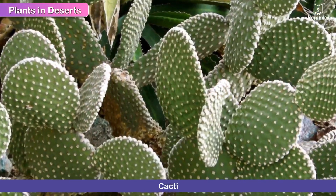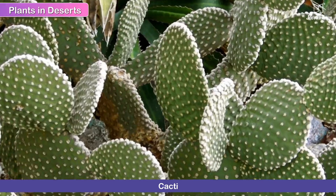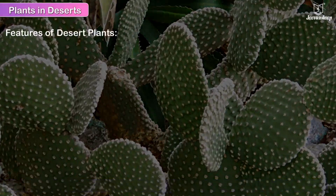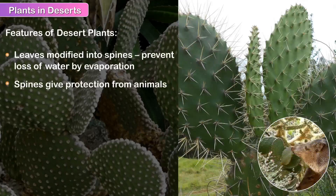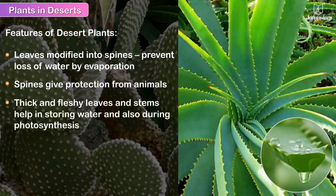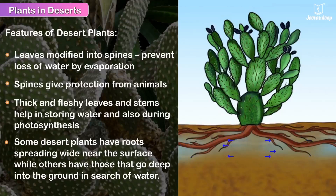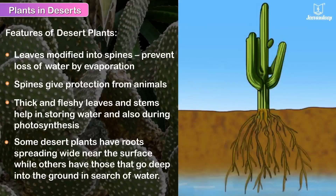Cacti are an excellent example of plants that adapt to desert climate. Some features of desert plants are: the leaves are modified into spines to prevent loss of water by evaporation. These also help the plants to protect themselves from animals. Some desert plants have thick and fleshy leaves and stems which help them in storing water as well as in photosynthesis. Some desert plants have roots spreading wide near the surface while others have roots that go deep into the ground in search of water.